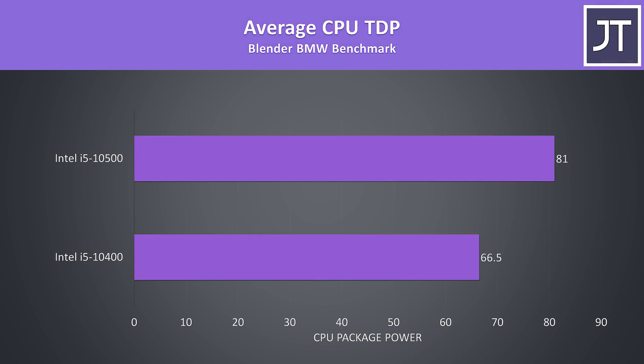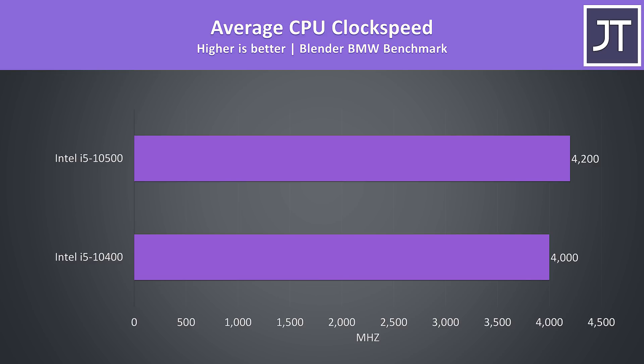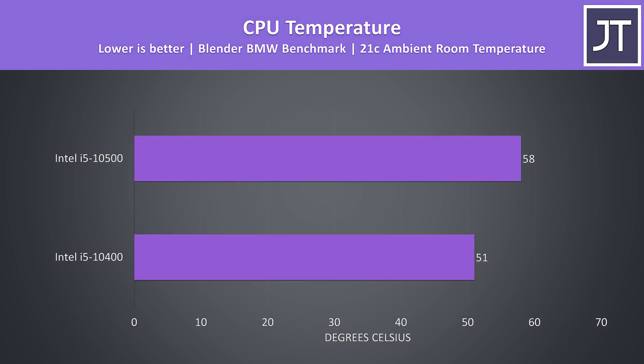Here's the package power as reported by HWiNFO — we're not actually being limited to the 65-watt TDP spec with the MSI Z490 ACE, though both processors were able to max out at their all-core turbo boost speeds without any problems. Higher power draw typically results in more heat, and with my 360mm AIO the 10500 was running 7 degrees warmer to achieve these performance differences.